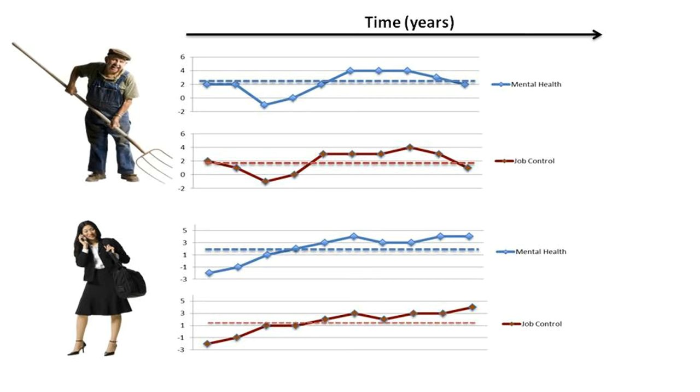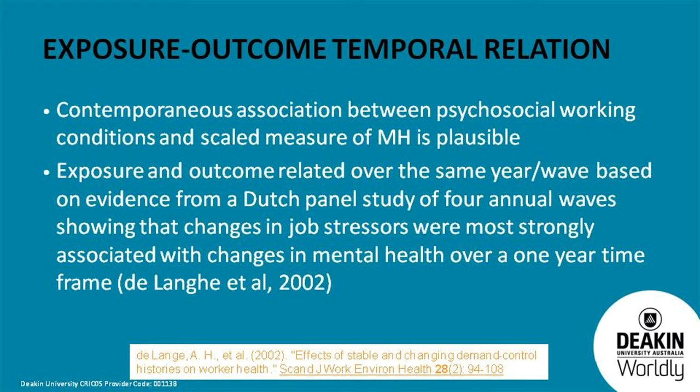What about the temporal relationship between job control and mental health? Because we're using a scaled measure, we've gone with contemporaneous — not put any lags in. There is a theoretical justification that you can have a contemporaneous association. One Dutch study shows that within a year, scaled measures of mental health — a contemporaneous association is probably the best fit. If we were looking at a dichotomous outcome, it might require longer or cumulative exposure. But because we're looking at a scaled measure, we thought this was okay.